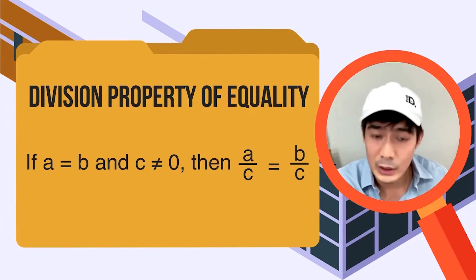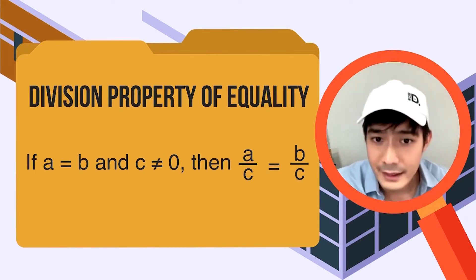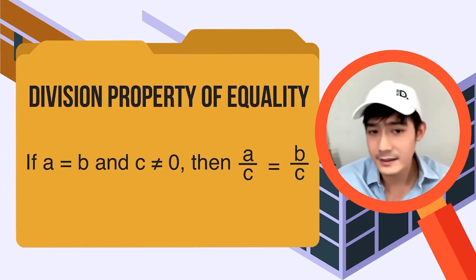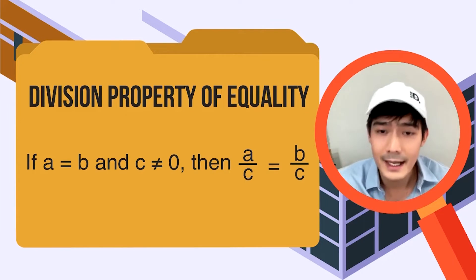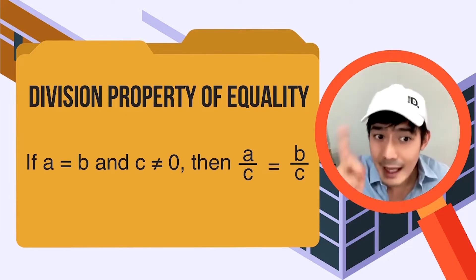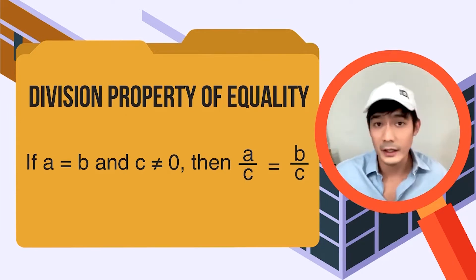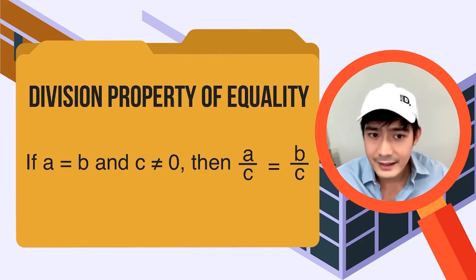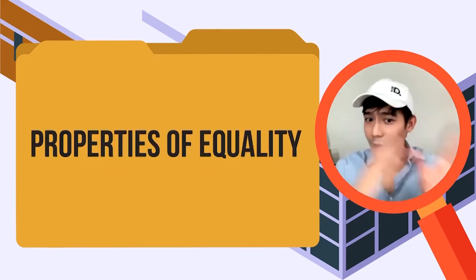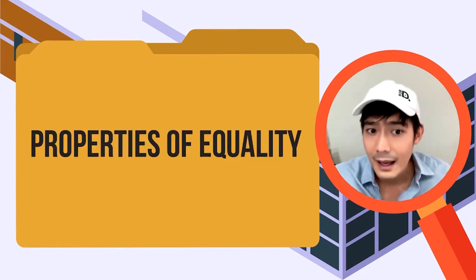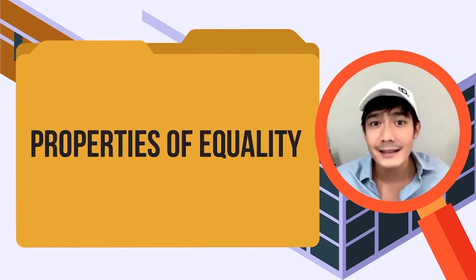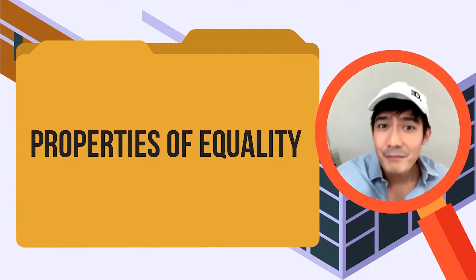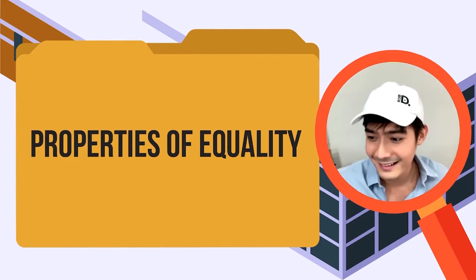Dahil sa pareho equation ay equal ang value ng A at B, pareho lamang makukuha kapag ikaw ay nag-multiply o nag-divide ng same value sa magkabilang side ng ating equation. Kaya laging nyong tatandaan: when we are solving equations, kung anuman yung value na i-multiply o i-divide natin sa isang side, kailangan gawin din natin sa kabilang side para maging balance ang ating equation. May equal sign — kaya equation.